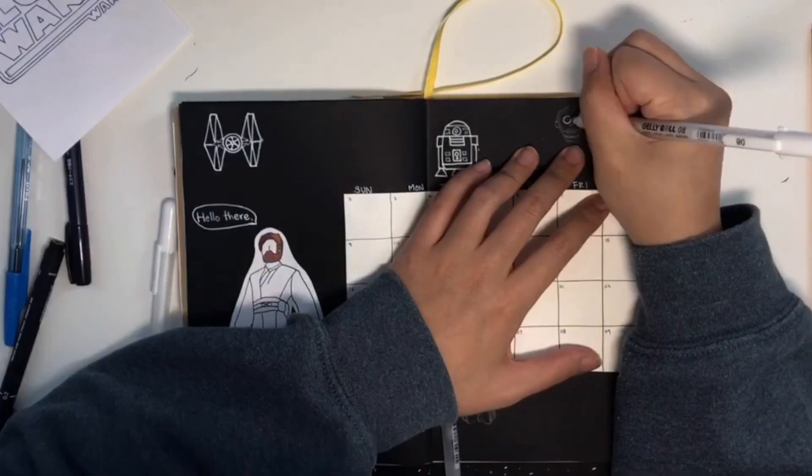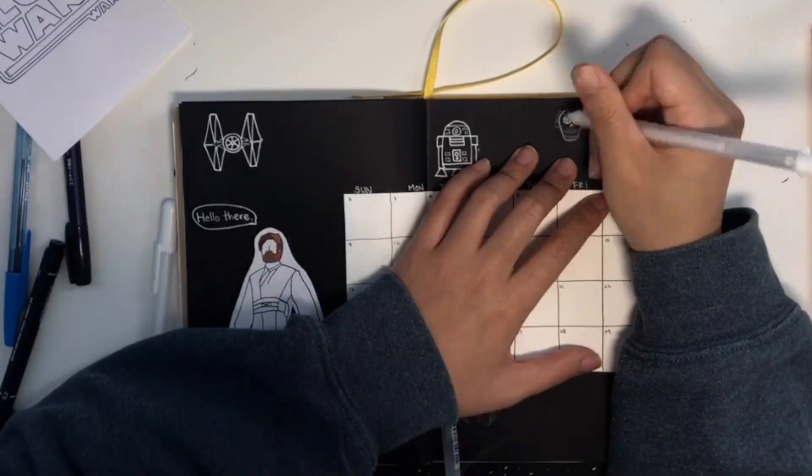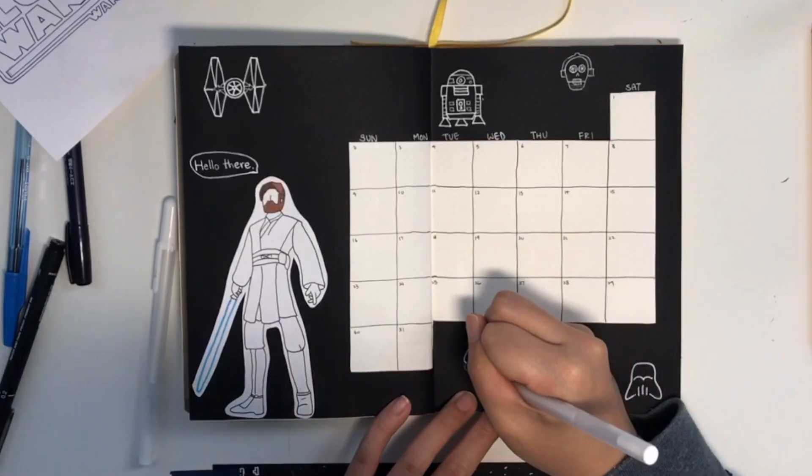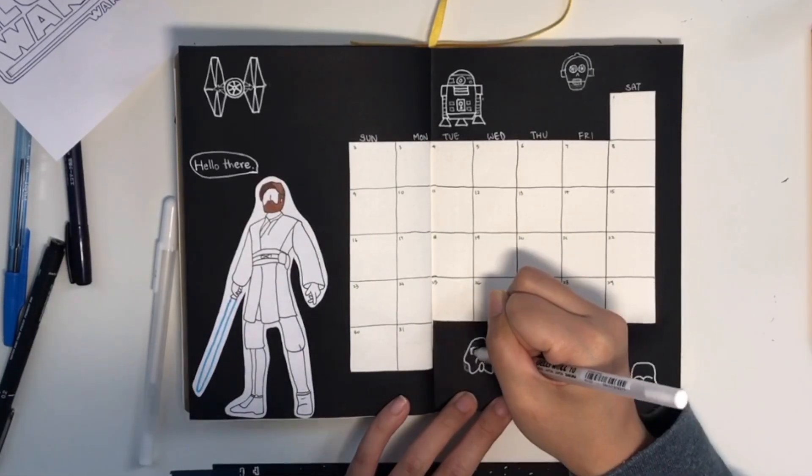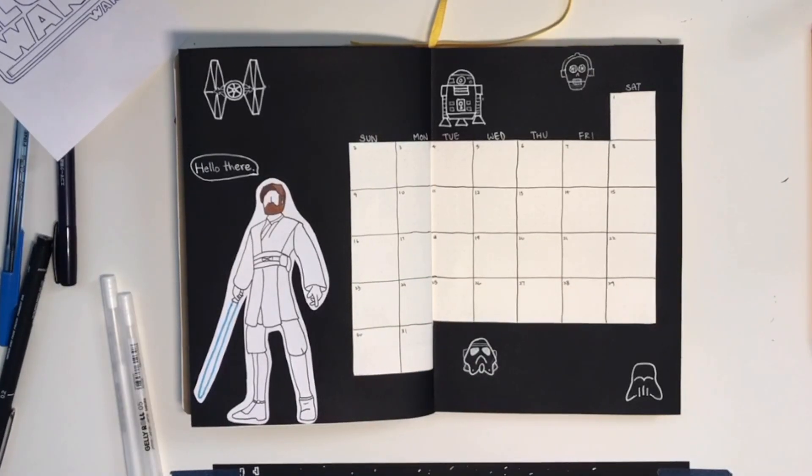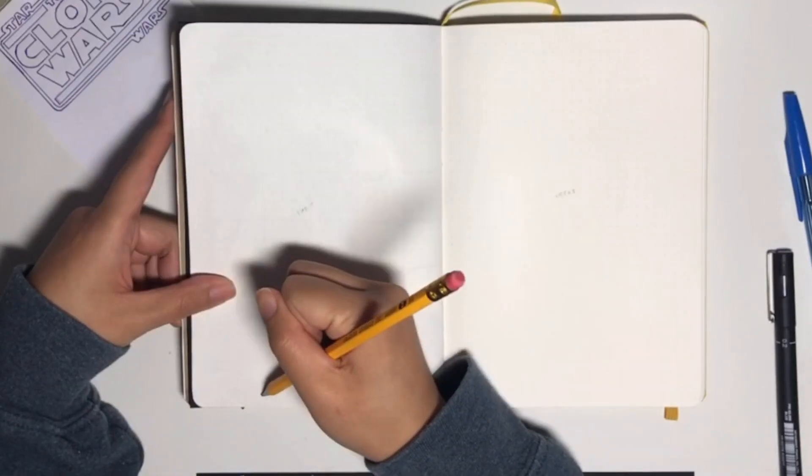And as you can see, I just did some doodles that also copied from the internet. Shout outs to people, a bunch of people who just post a shitload of Star Wars doodles. Very helpful. And on the left where Obi-Wan is, I gave him a little quote of Max's favorite line and it's, hello there.